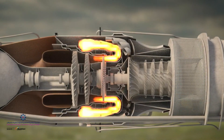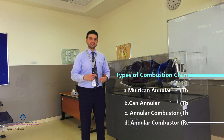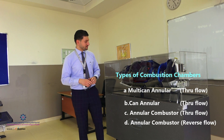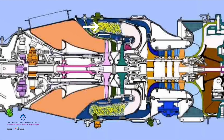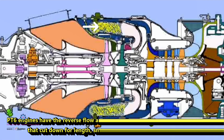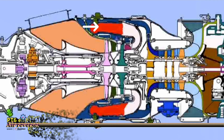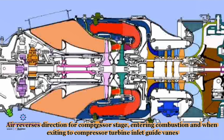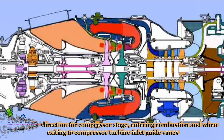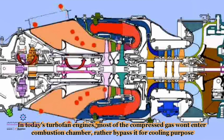As for the combustion section, we have various types such as can, can-annular, and multi-can combustion chambers, where compressed air meets fuel and ignition to create massive blasts of high pressure, high temperature gas that tries to escape out through the exhaust. However, it will first be encountered by turbines.